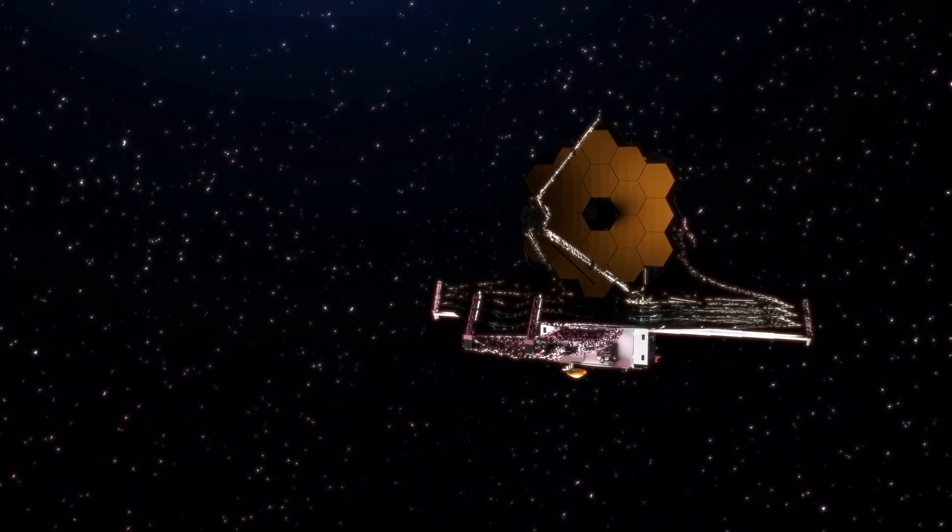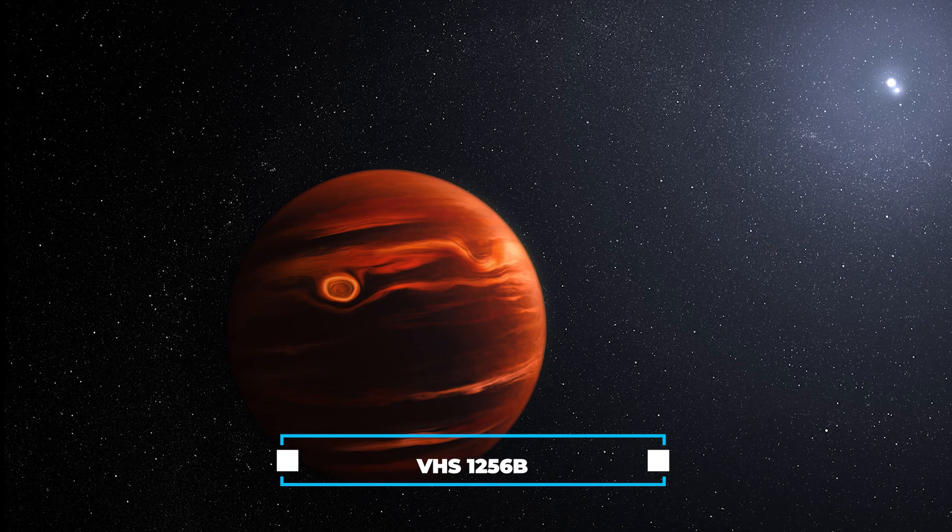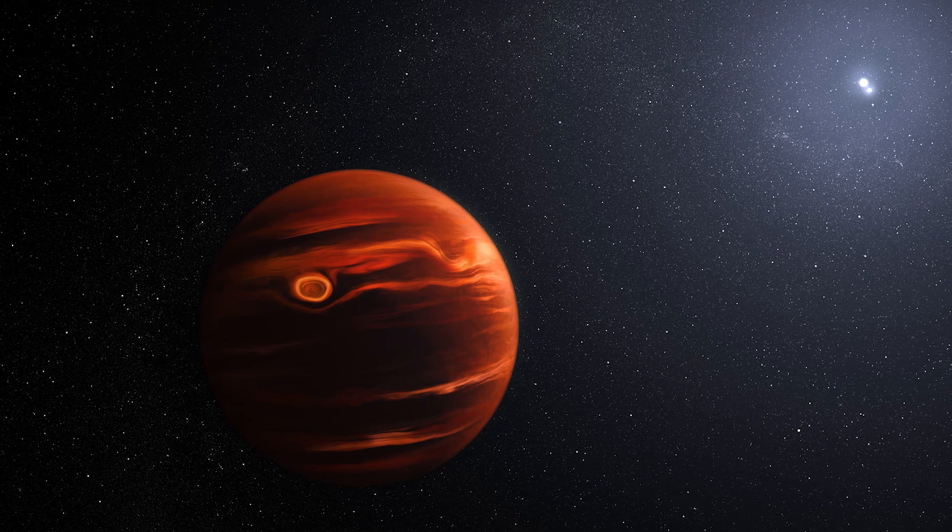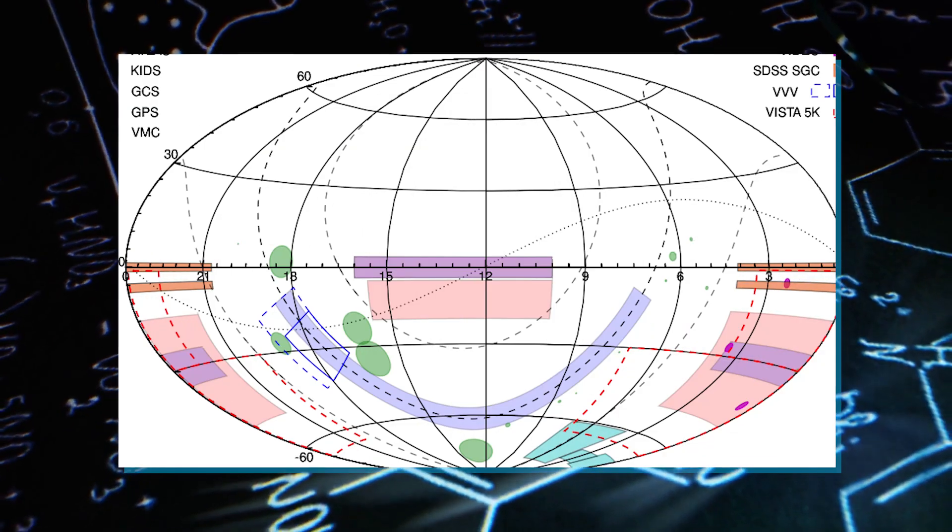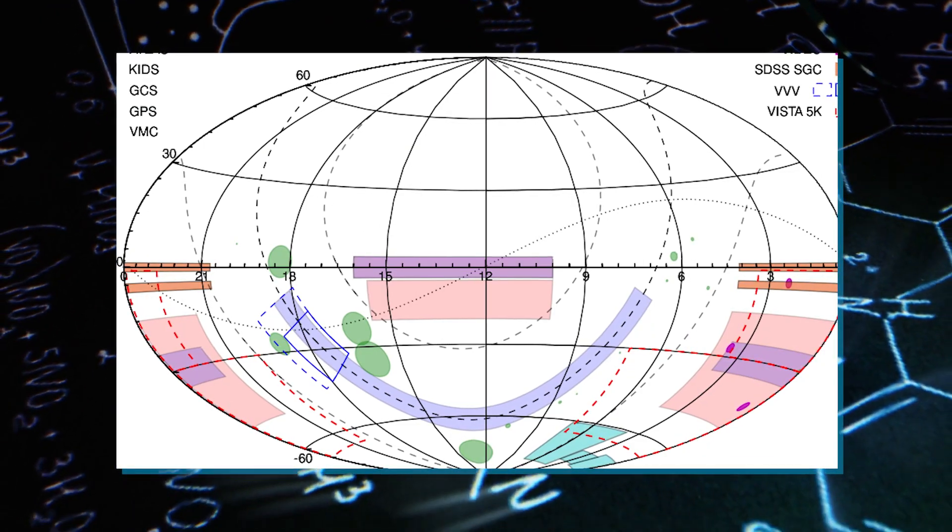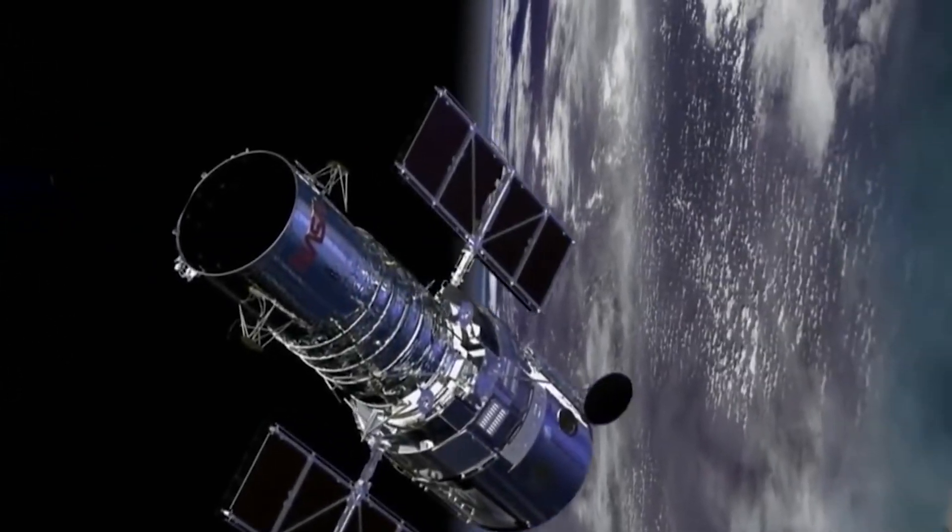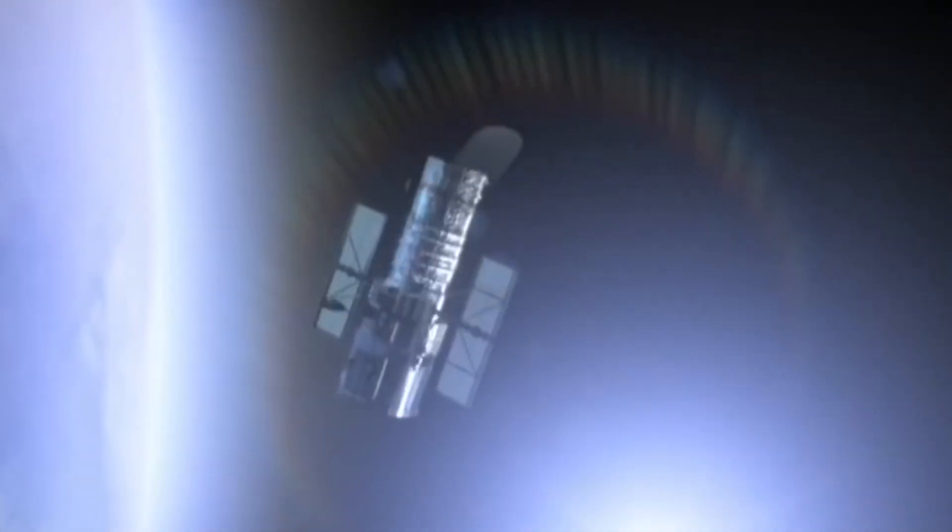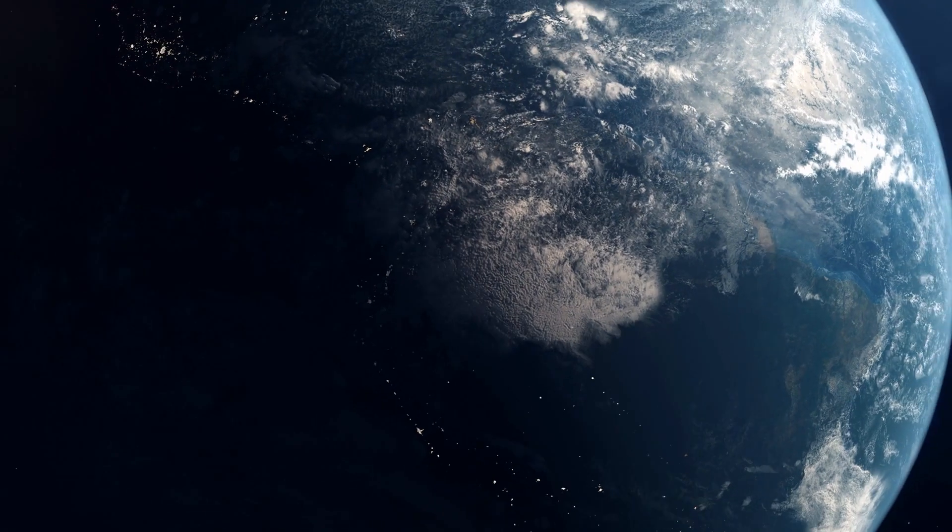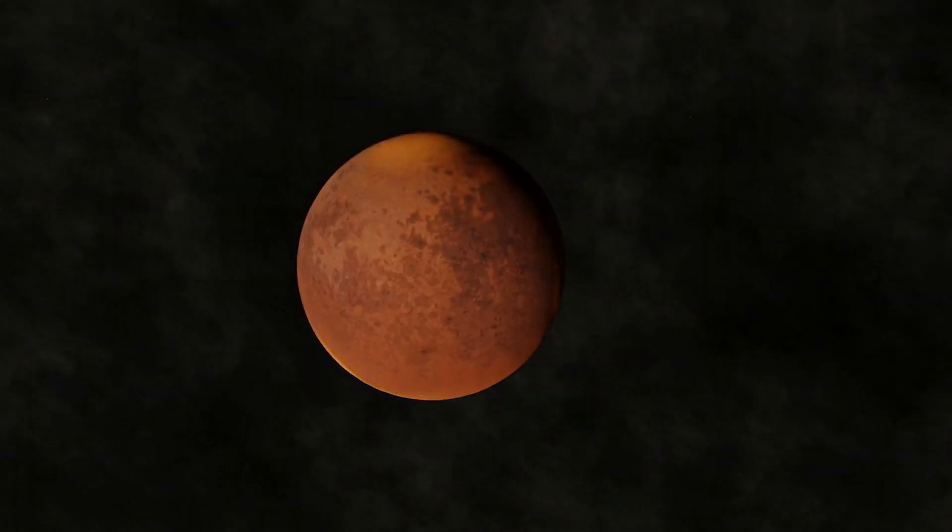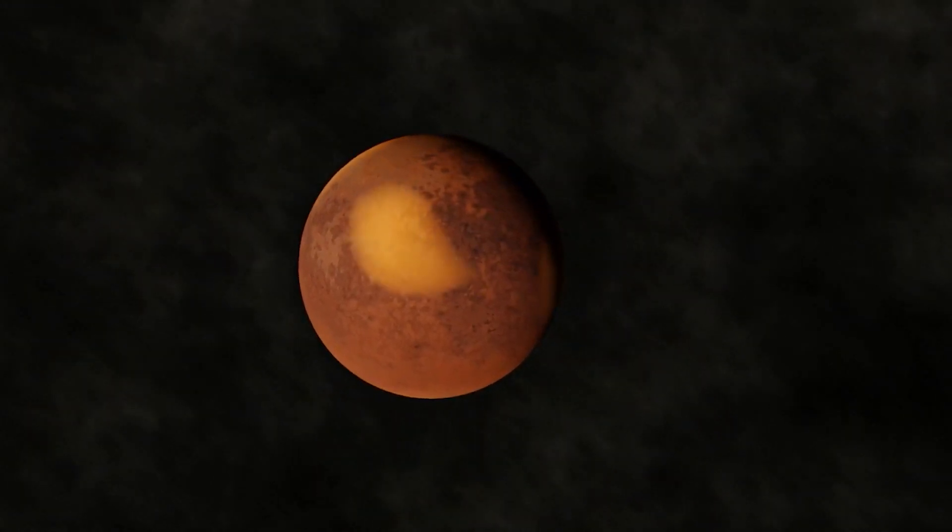The telescope unveiled an intriguing exoplanet named VHS-1256b, further contributing to its remarkable legacy. Astronomers utilized data from the VHS-1256b and the Wide Field Infrared Survey Explorer satellite to observe and characterize a planet located approximately 40 light-years away from Earth.